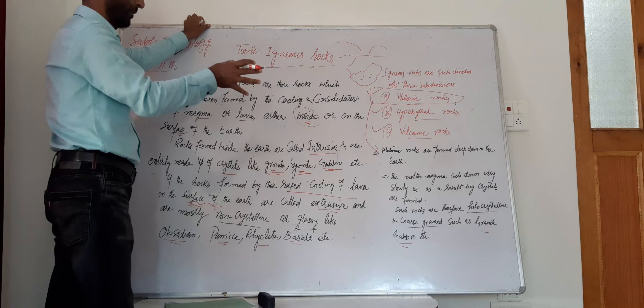Here is an example: granite, syenite, and gabbro are formed deep inside the earth. The material in the form of lava and magma comes out from inside the earth to the surface. On the surface, the temperature is very low compared to the temperature inside the earth.